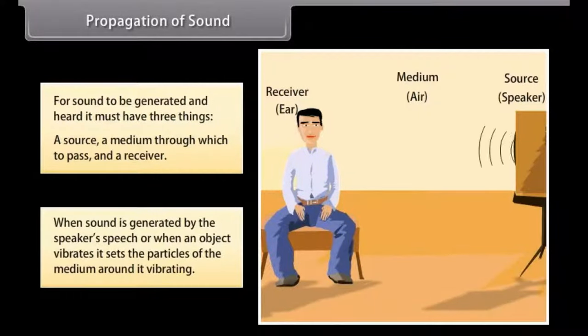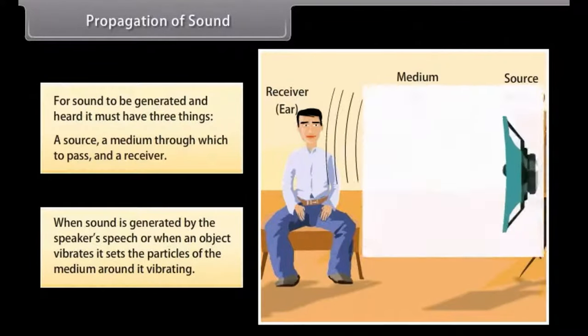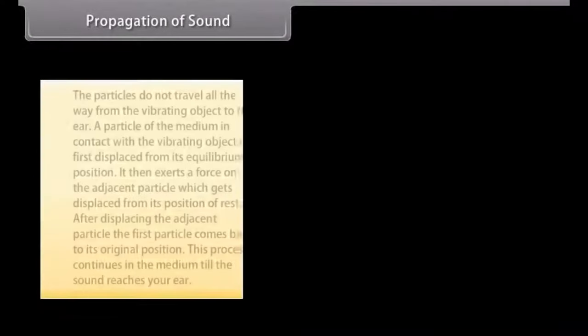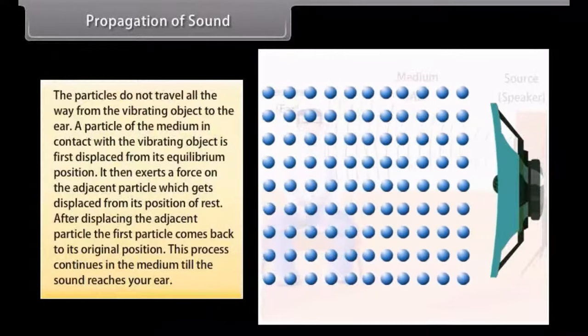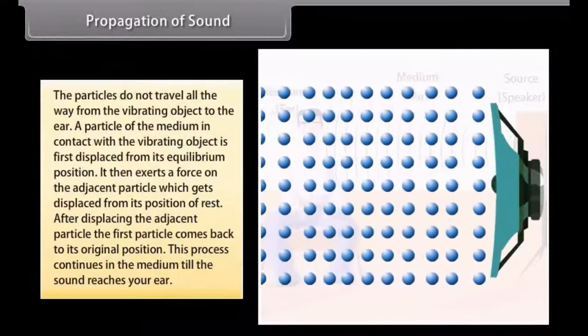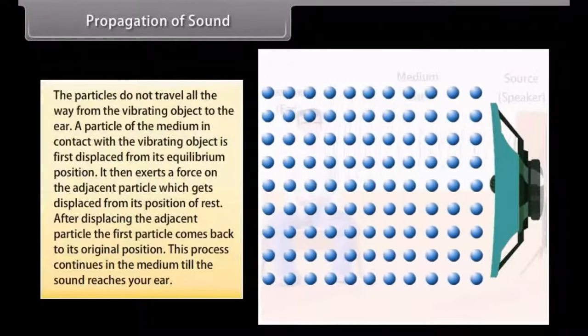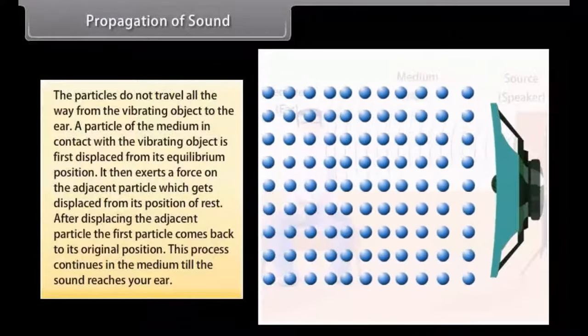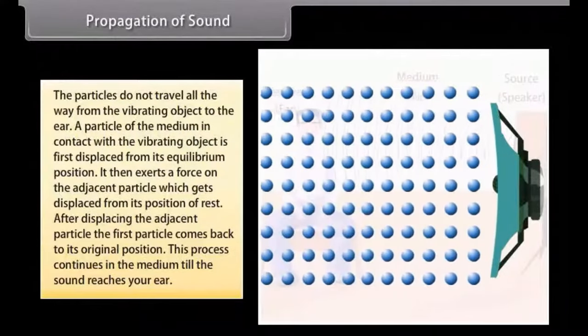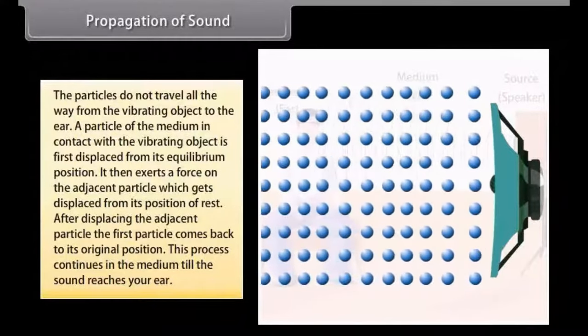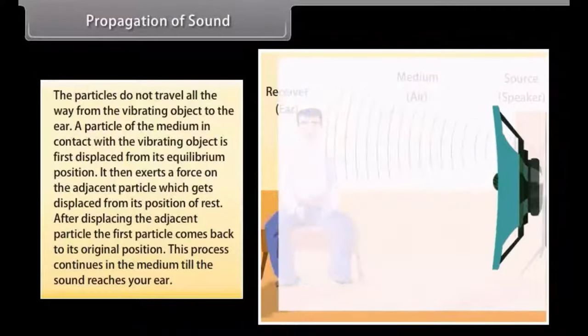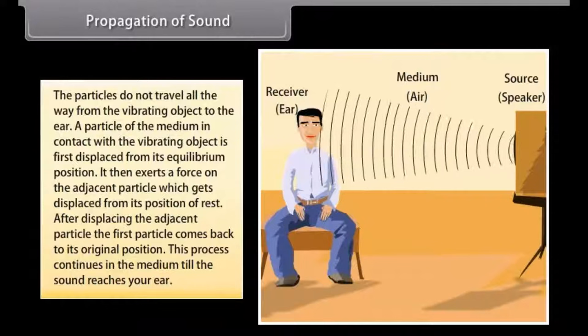When a sound is generated by the speaker's speech, or when an object vibrates, it sets the particle of the medium around it vibrating. The particles do not travel all the way from the vibrating object to the ear. A particle of the medium in contact with the vibrating object is first displaced from its equilibrium position. It then exerts a force on the adjacent particle, which gets displaced from its position of rest. After displacing the adjacent particle, the first particle comes back to its original position. This process continues in the medium till the sound reaches your ear.